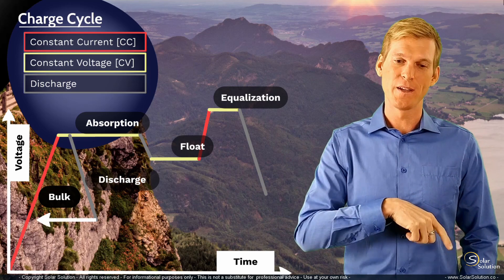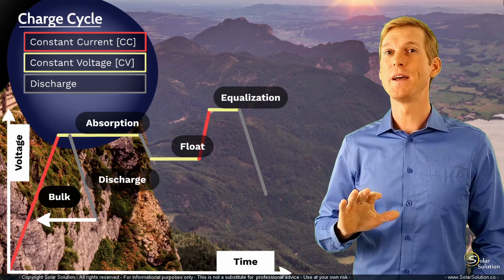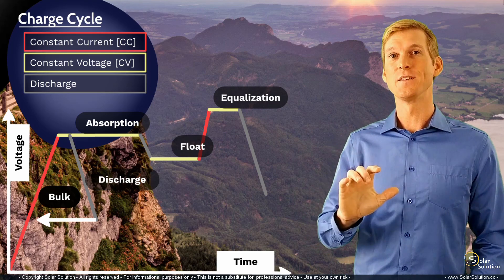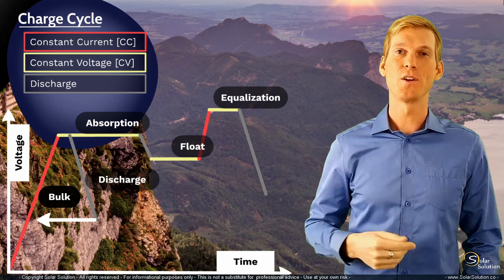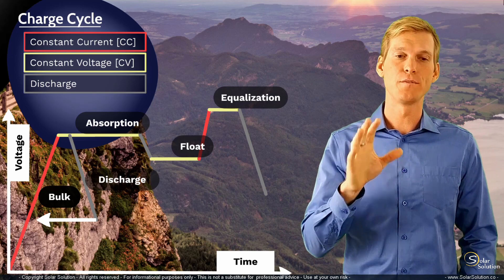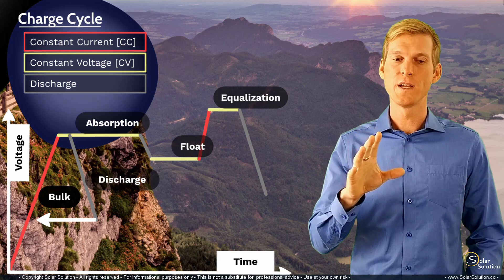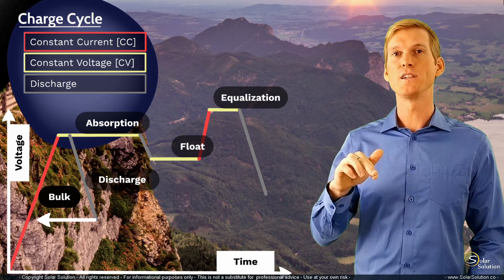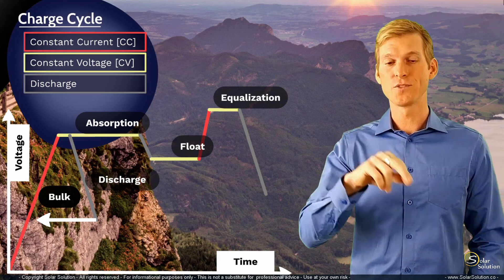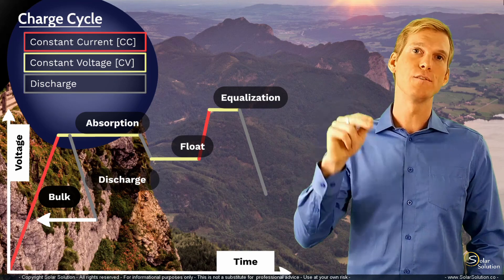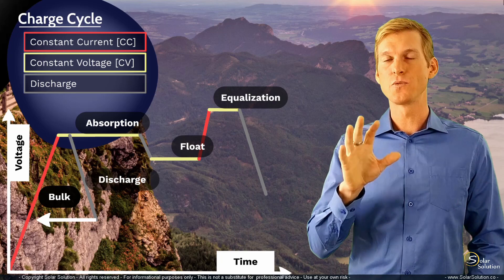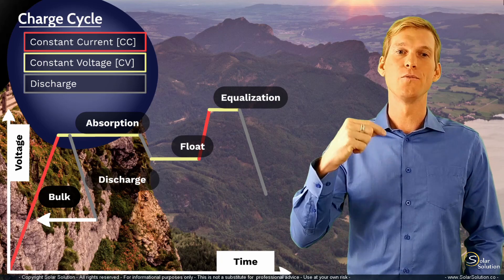So you start to push current into the battery at a constant current rate, until you've reached the absorption voltage again and the process starts all over again. But just remember that for many batteries it's quite important that at least on a regular interval you actually complete the whole cycle, so you run completely through the bulk and absorption stage until you have reached the float stage. So for certain batteries it's quite important that you do this on a regular interval.